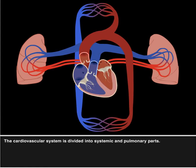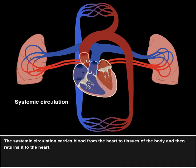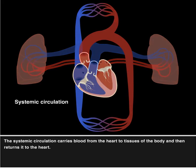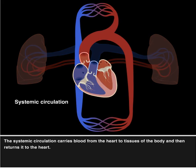The cardiovascular system is divided into systemic and pulmonary parts. The systemic circulation carries blood from the heart to tissues of the body and then returns it to the heart.